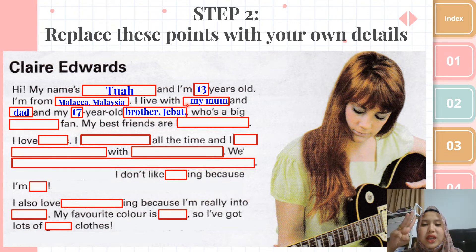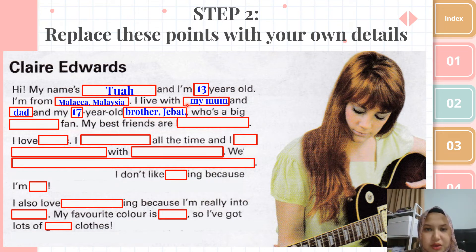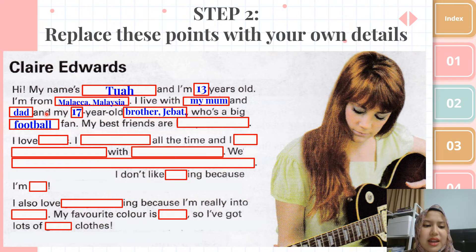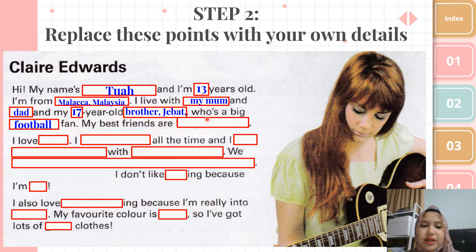That's why I want you to choose three people who live with you — so it's easier to fill in the blanks. Then the essay wants you to explain a bit about your sibling — like what they're a fan of. For example, this one says 'who's a big football fan.' It can be anything — Mobile Legends, PUBG, any kind of sports, or maybe your sibling likes reading — like 'who's a big Harry Potter fan.' Then 'My best friends are Lekay and Lekyu' — write the names of your best friends.